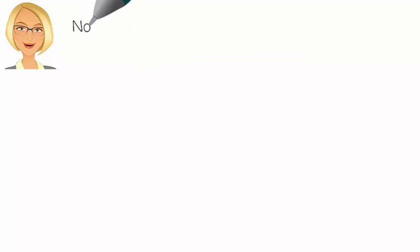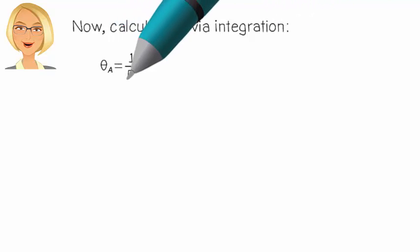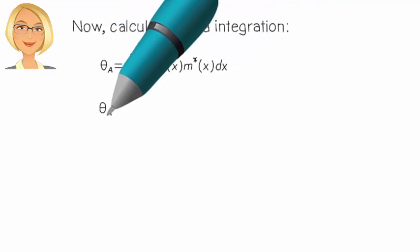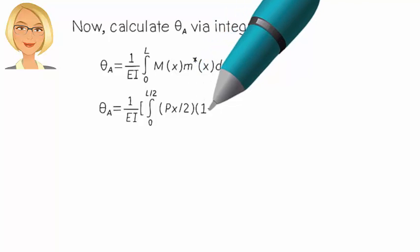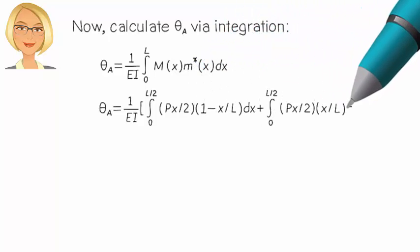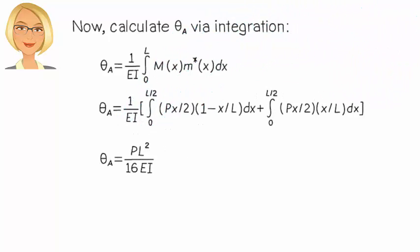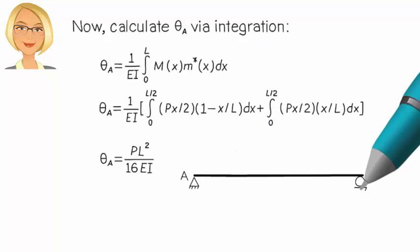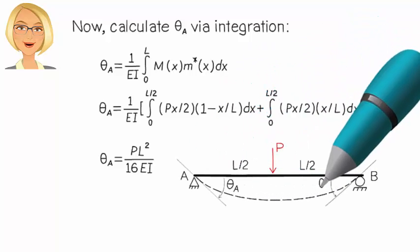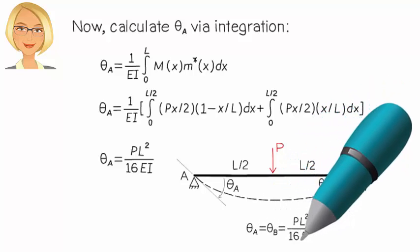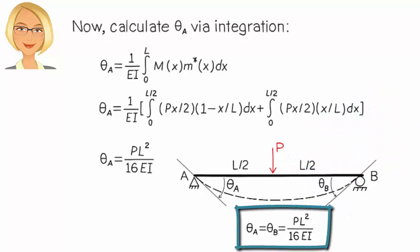So theta A can be calculated by integrating Mx times M*x like this. Therefore, the beam's end-rotations are PL squared over 16 EI.